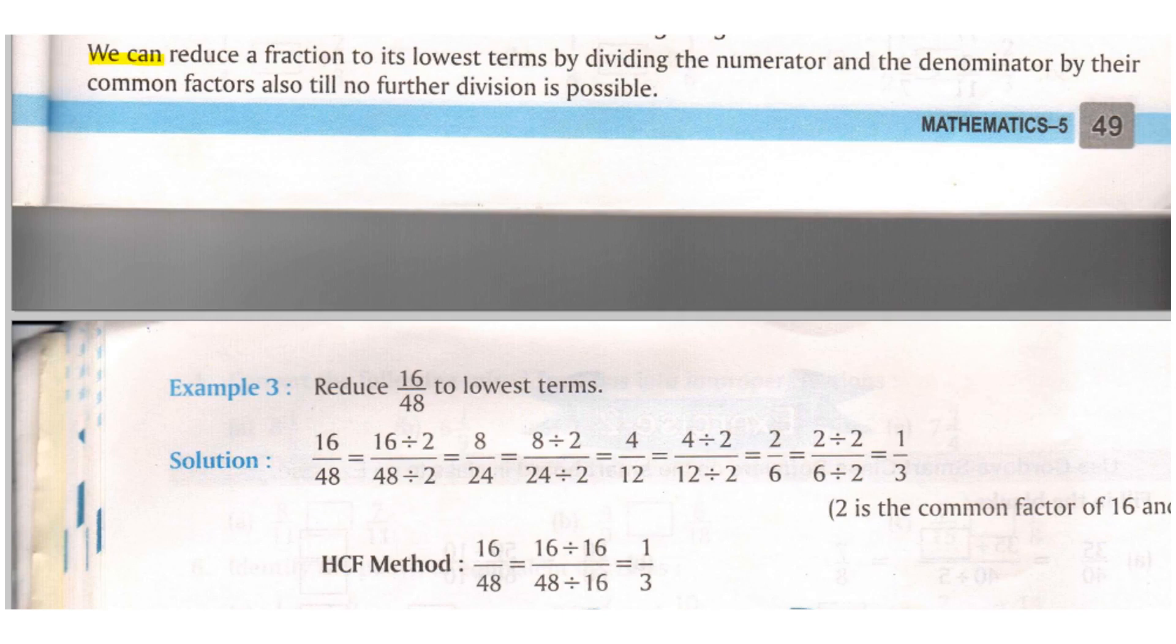We can reduce a fraction to its lowest terms by dividing the numerator and denominator by their common factors also till no further division is possible. One more method is to keep on dividing the number with a common number.